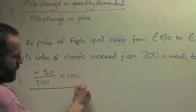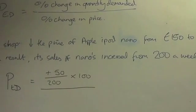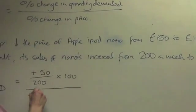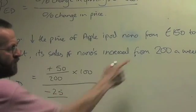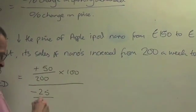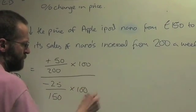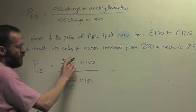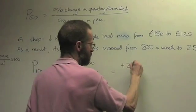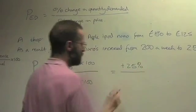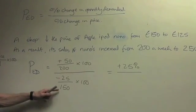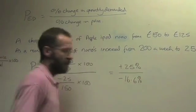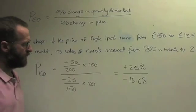On the bottom, you have percentage change in price. This time, the price fell from 150 to 125. That is minus 25 over the original, which is your starting price, 150, multiplied by 100. If you work this out, 50 over 100 is the same as 1 over 4, so on the top it is plus 25%. And on the bottom, that's the same as 1 over 6 multiplied by 100, gives you minus 16.6%. Use a calculator.